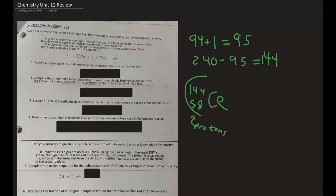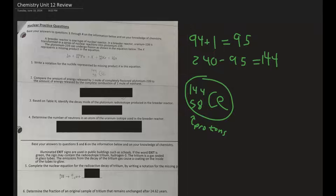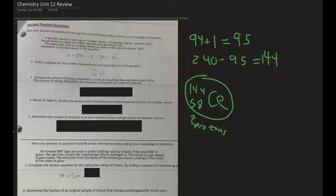In our case, that is going to be Ce. So that should be the nuclide — the missing product X in this equation. Alright, number two.